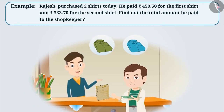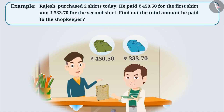Rajesh purchased two shirts. He paid Rs. 450 and 50 paise for the first shirt and Rs. 333 and 70 paise for the second shirt. Find out how much he paid in total to the shopkeeper.